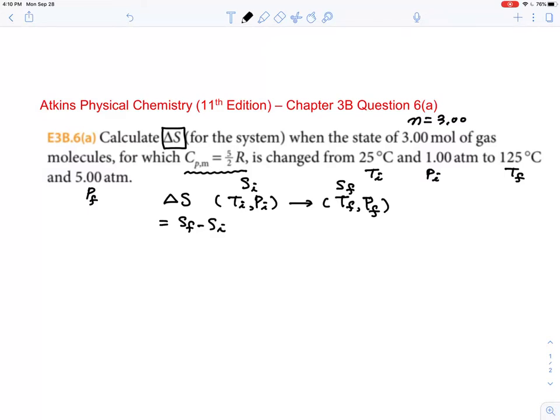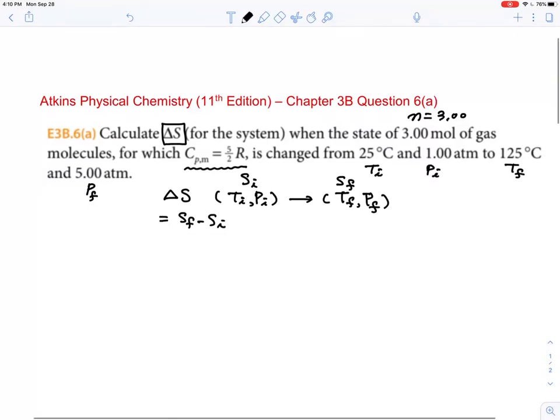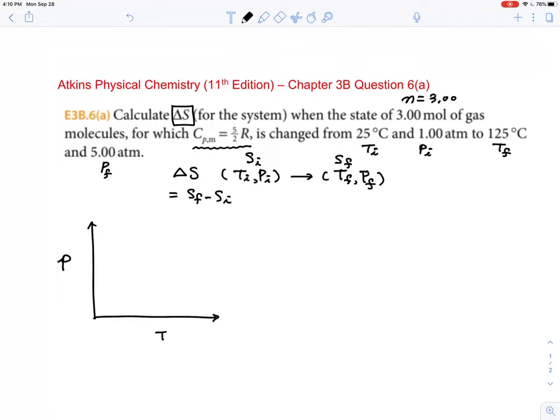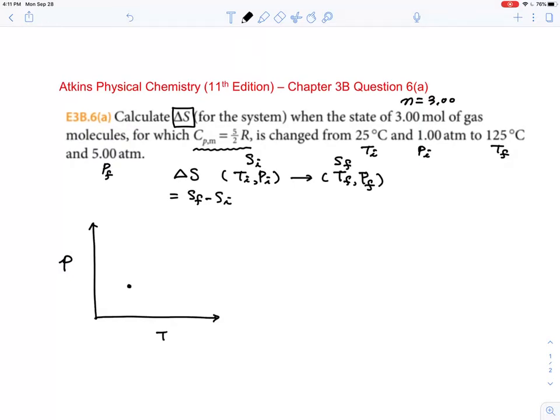What we need to do is take advantage of the fact that some processes are easy to calculate the delta S for by defining the process. Having said that, I usually like to draw the diagram just to graphically represent the change in temperature and change in pressure. So let me put temperature and pressure on two axes. You are here at 1 atmosphere of pressure, and then you are at 25 degrees C, which we'll change later to Kelvin.